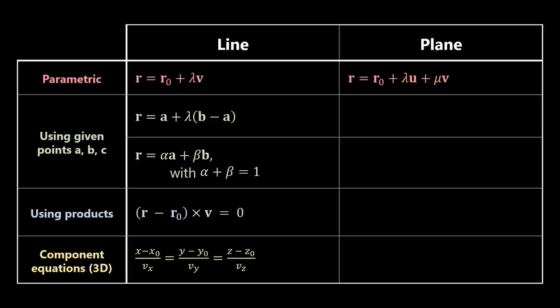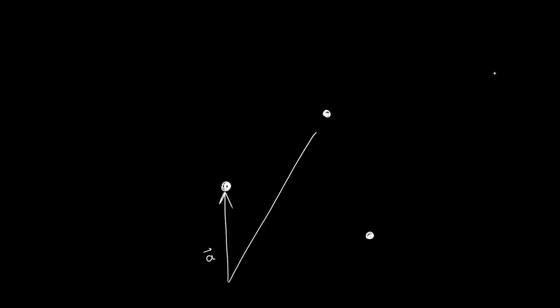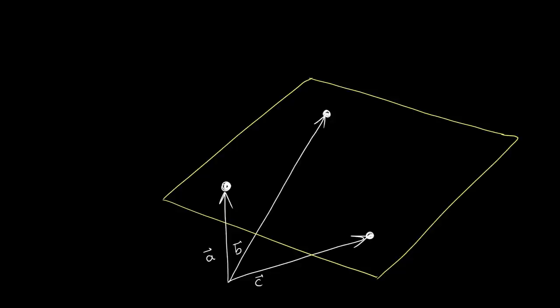Having looked at the parametric equation of a plane, we can now ask how to write the equation of a plane if we are given three points a, b, and c. We are given three points a, b, c and we know that the three points must define a certain plane. In order to write this in parametric form, we need any point in the plane for r0 — for example we can choose a — and then we need two vectors contained in the plane. We can choose u equals b minus a and v equals c minus a.